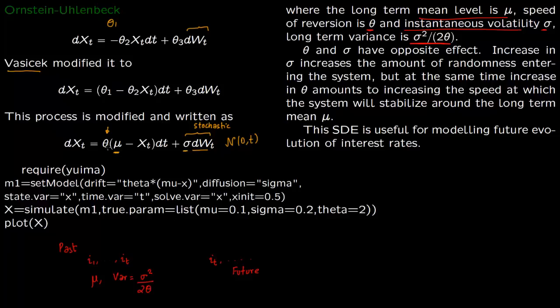Now what is sigma and theta going to do? Sigma is a part of Brownian motion. So sigma is going to increase randomness but theta is going to increase convergence. So let us see this more carefully.